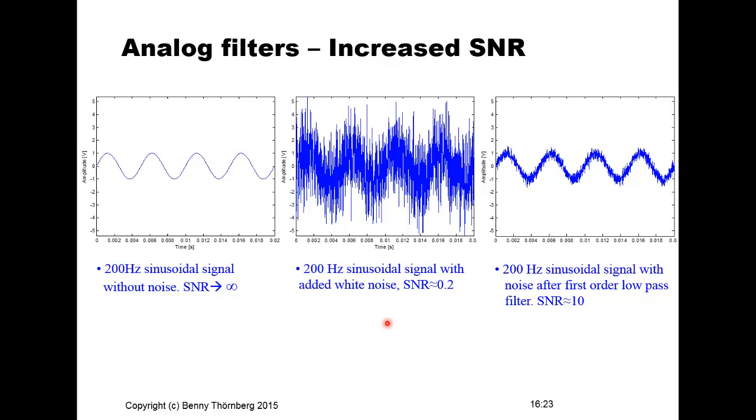Filters can be used to improve the signal-to-noise ratio by selectively allowing only the frequencies containing the signal to pass. If you have good knowledge of the signal's frequency content, you can prevent wide-spectrum white noise from entering the system. As an example made using MATLAB simulations: the leftmost graph shows a clean 200 Hz sine wave with essentially infinite SNR.